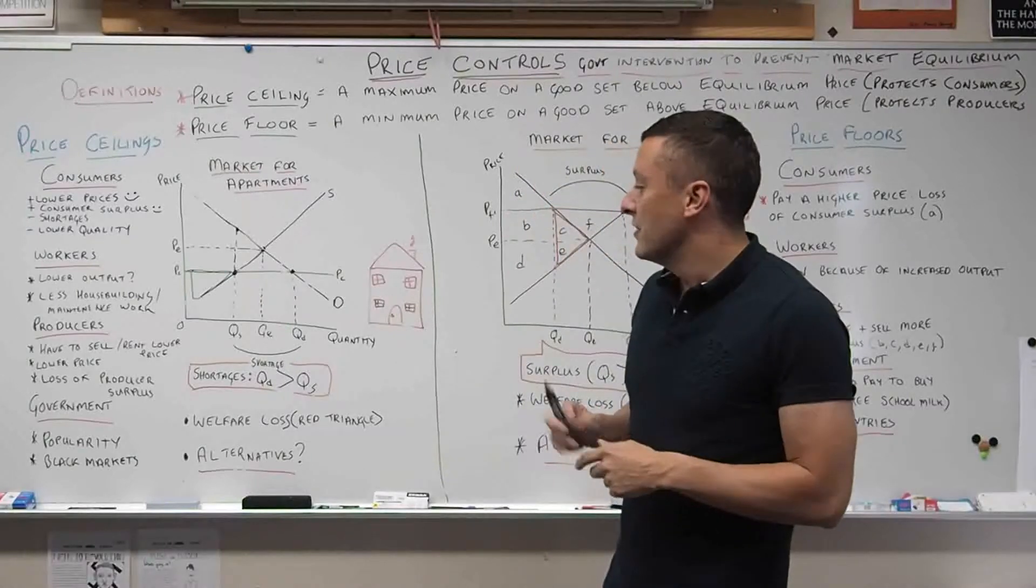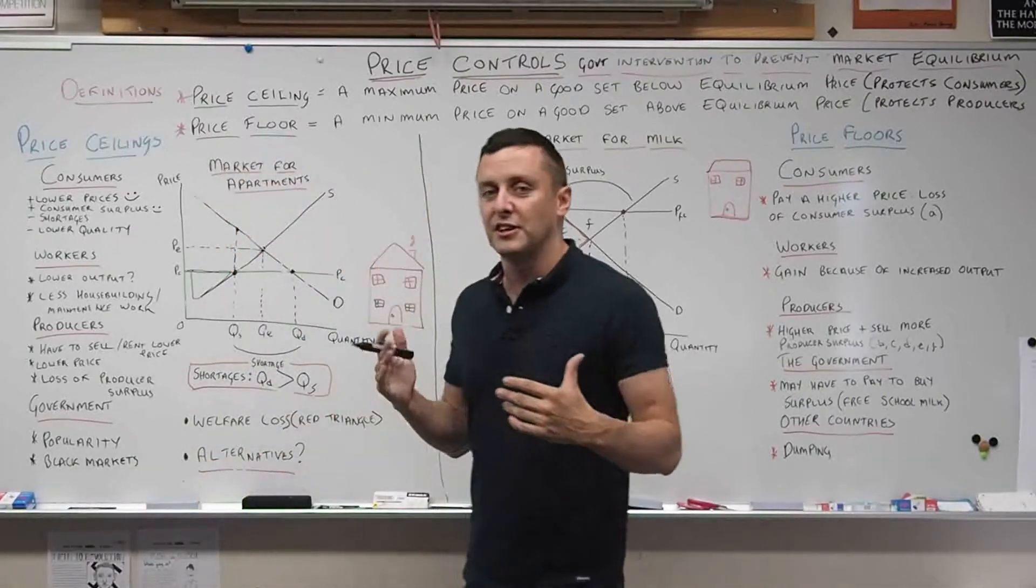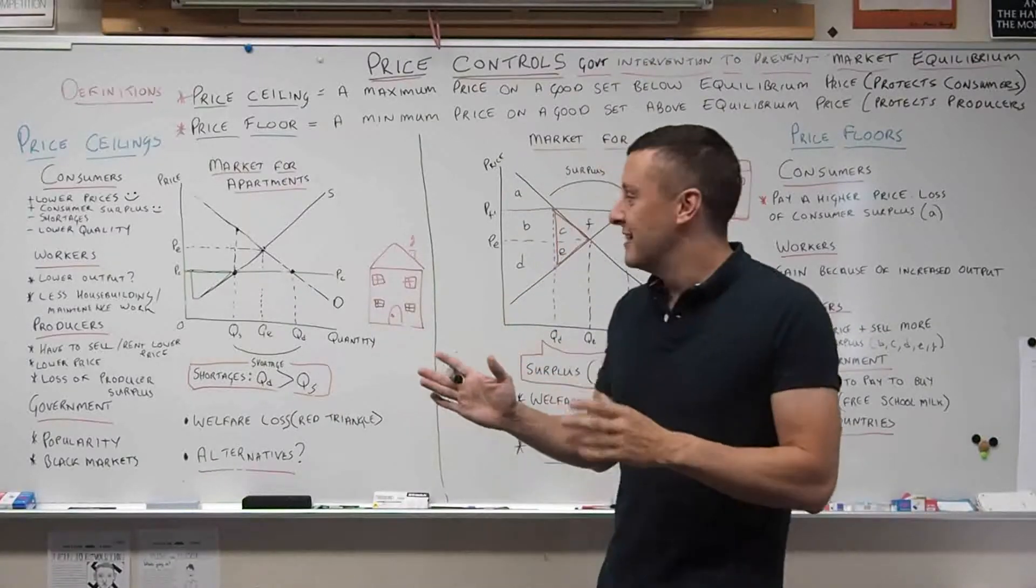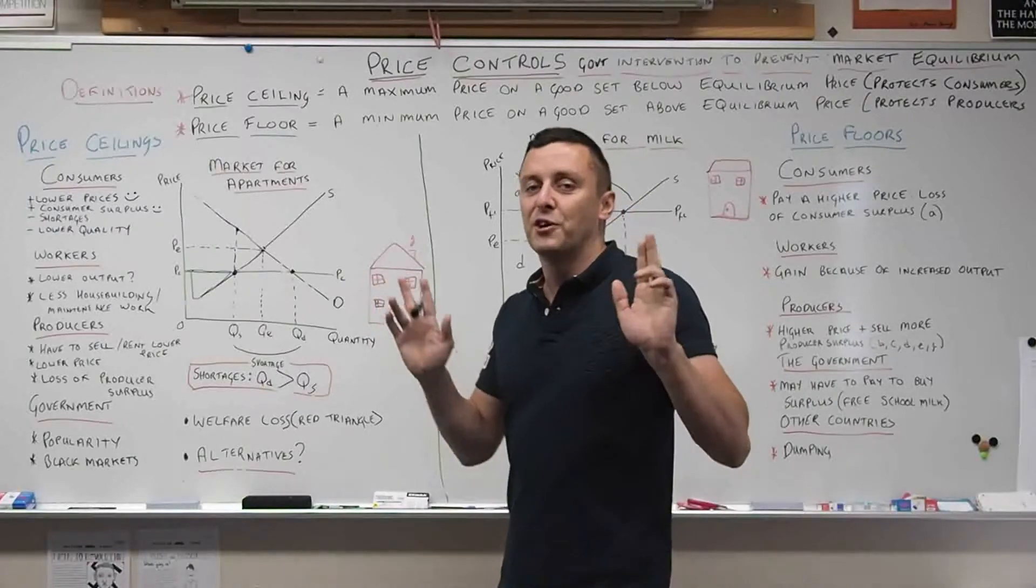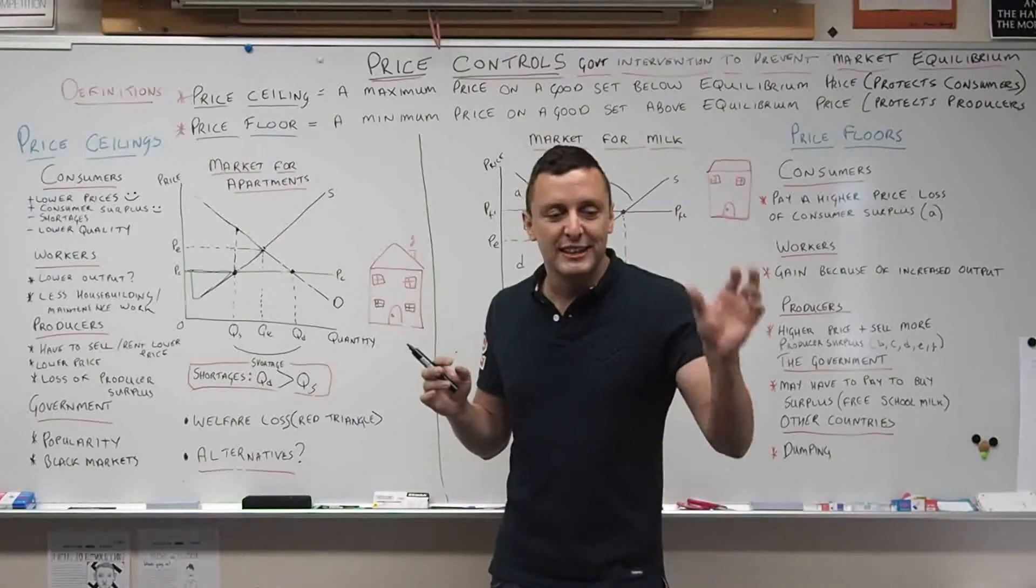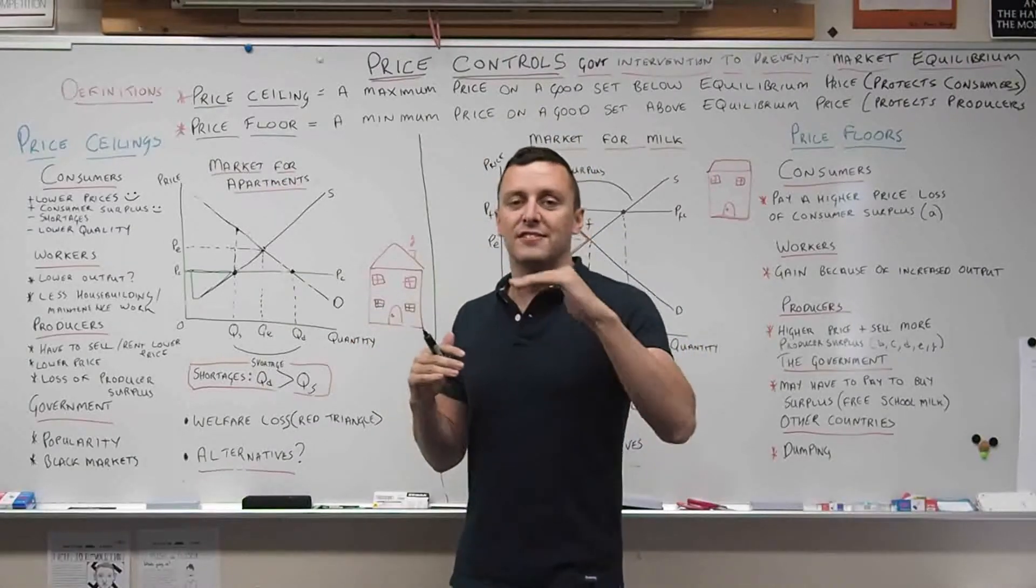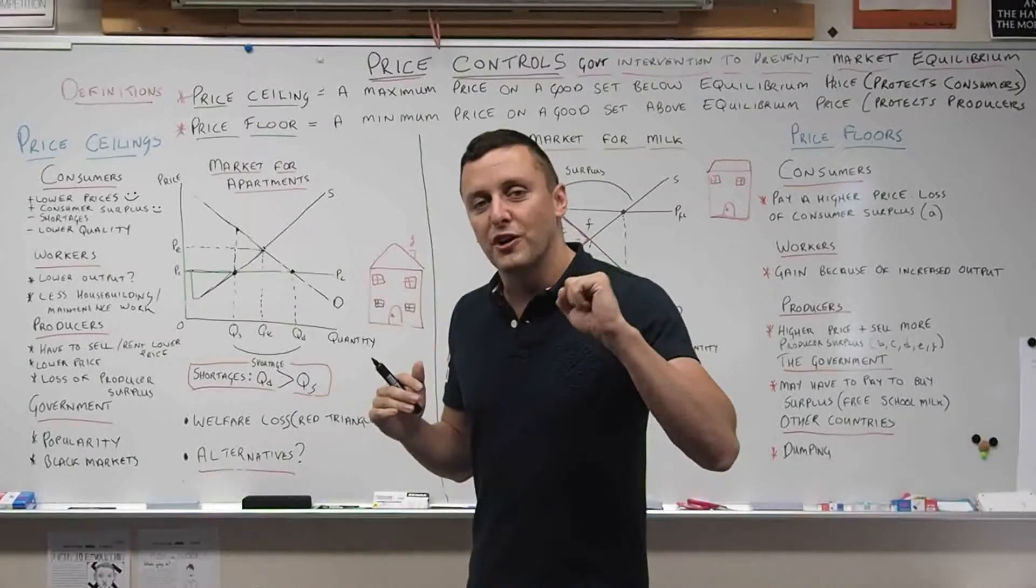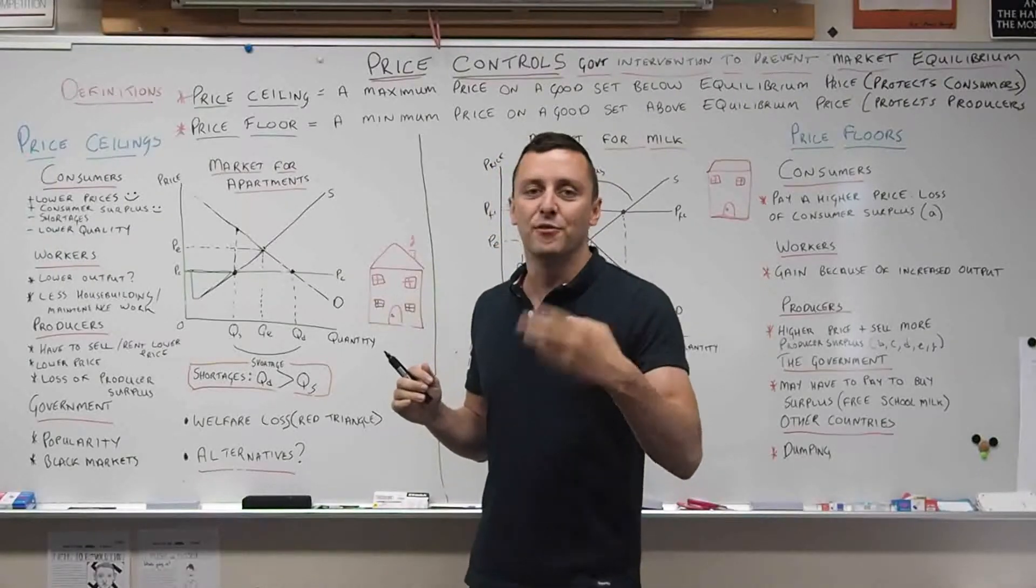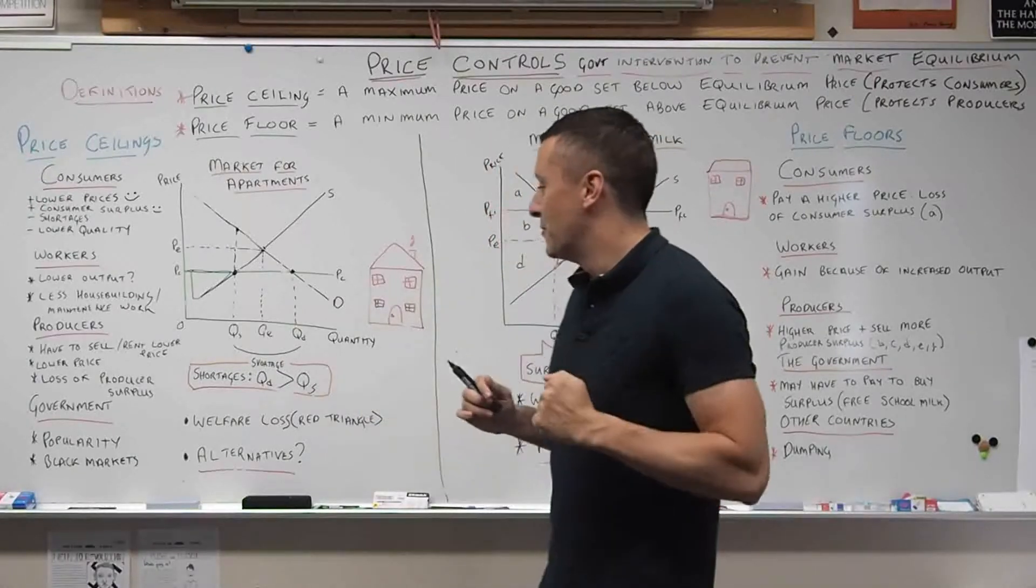There's also another issue of black markets. For Japan, to get around the idea of price ceilings, they had an idea called key money - literally what it says. You're buying the key to the apartment. The apartment landlords knew they could only charge the same amount every month, so they would charge this insane price just to buy the key. This would often be four months rent at the beginning, artificially increasing their revenue.